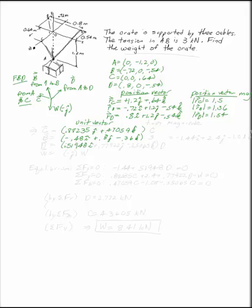These are the position vectors along each of the cords, and the unit vectors along each of the cords.